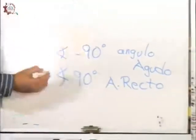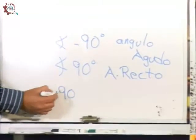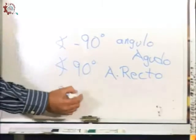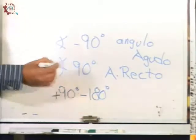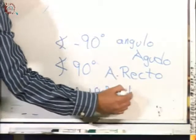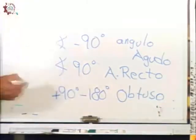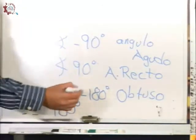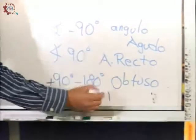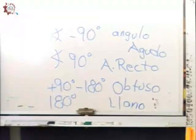También sabemos que un ángulo de 90 grados le llamamos ángulo recto. Un ángulo mayor de 90 grados y menor de 180 grados le llamamos un ángulo obtuso. Y sabemos que un ángulo de 180 grados le llamamos un ángulo llano.